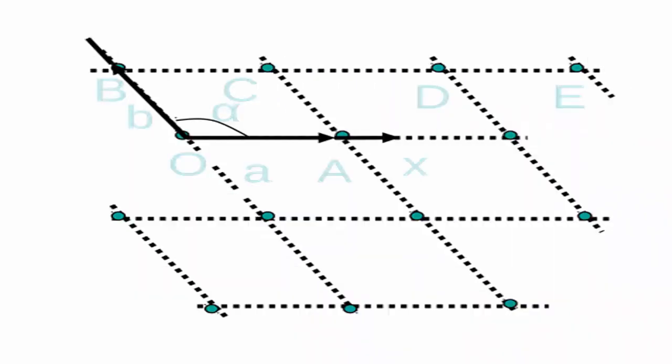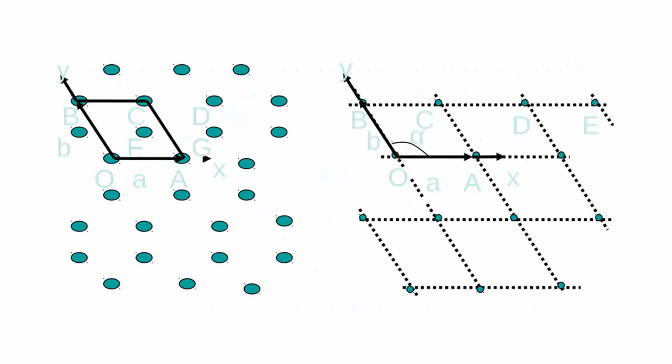An infinite array of points in space. Each point has identical surroundings to all others. Arrays are arranged exactly in a periodic manner.